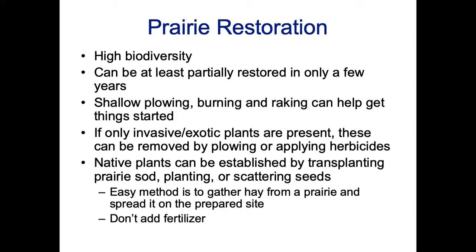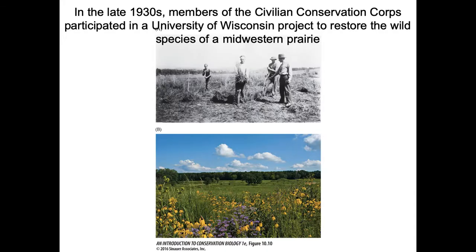An easy method is to gather hay from a prairie, especially if it's nearby, and then spread it across the prepared site because all the seeds in the hay will provide a starting place for getting the prairie plants going. You don't want to add fertilizer because the fertilizer might actually help invasive species take hold more easily.